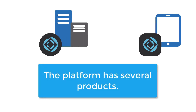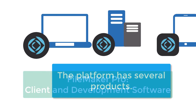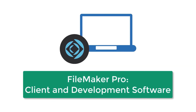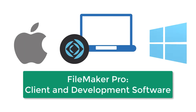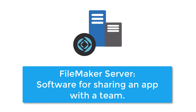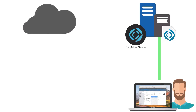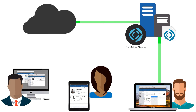The FileMaker platform is actually comprised of several different products, which include FileMaker Pro — the client and development software that runs both on the Mac and Windows platforms. There's also FileMaker Server, a separate software package that's designed to host or share your FileMaker solution on an office network or across the internet. FileMaker Server works on your company's Mac or Windows servers.